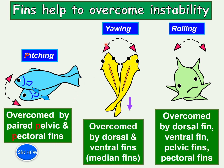Yawing — left and right movement — is overcome by the dorsal and ventral fins. If the fish is yawing to the left, the dorsal fin moves to the left, and the opposite reaction of water pushes the fish back to the center. Similarly, if the fish moves too far right, the dorsal fin moves to the right and the water reaction pushes the fish back to the correct central position.